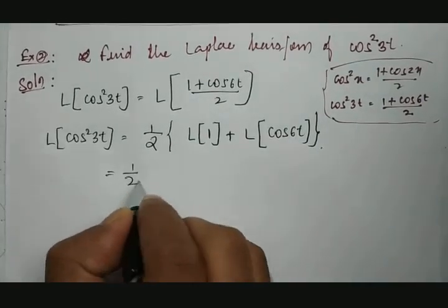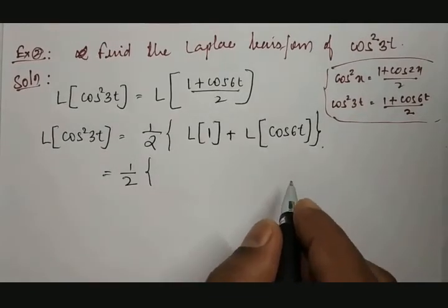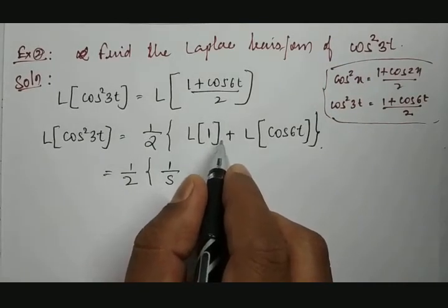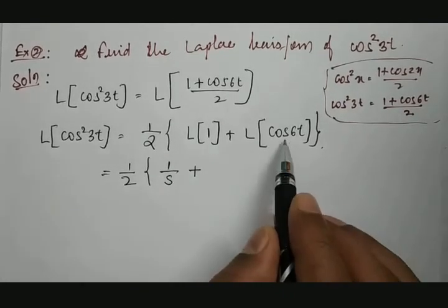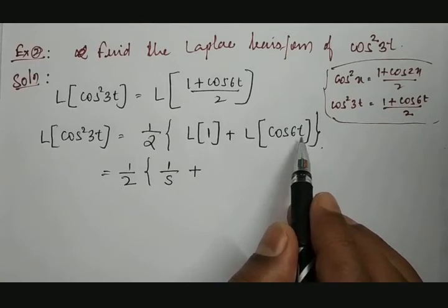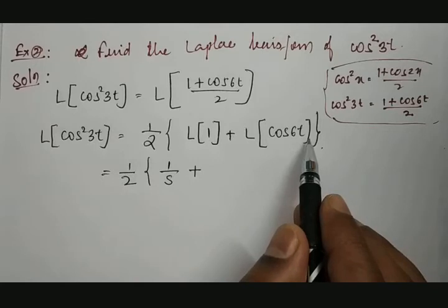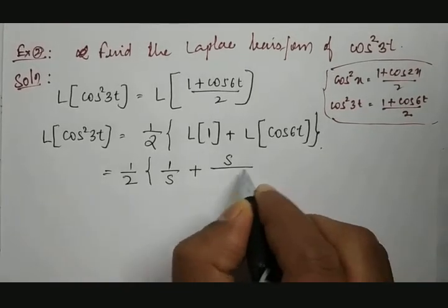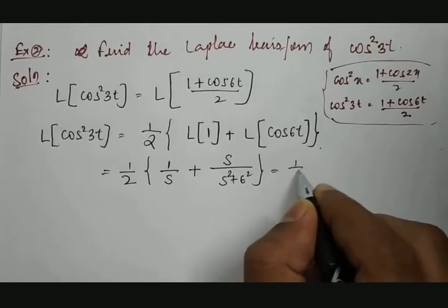Therefore one-half times: what is the Laplace transformation of 1? The Laplace transformation of 1 is 1 divided by s — this is the elementary function. The Laplace transformation of a constant is the constant divided by s, so it is 1/s. Plus, the Laplace transformation of cos(at) is s divided by (s squared plus a squared). So as per that, we get s divided by (s squared plus 6 squared).